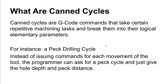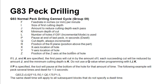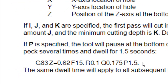Instead, you can encode all that motion into a canned cycle — for example, specifying pecks of a quarter inch, going in and out a quarter inch each time, and packaging all of that into a single cycle.